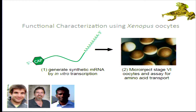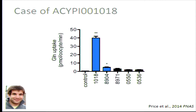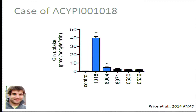We started working with Chuck's group using the Xenopus laevis expression system to functionally characterize these transporters. We generate synthetic RNA, microinject Xenopus oocytes, wait a couple of days for them to express the transporters and localize them to membrane, and then use these oocytes in radio uptake experiments or electrophysiology experiments. In a glutamine transport experiment, only two transporters — 1018 and 8904 — transported glutamine above background level, with 1018 performing much better. So we started working with 1018.